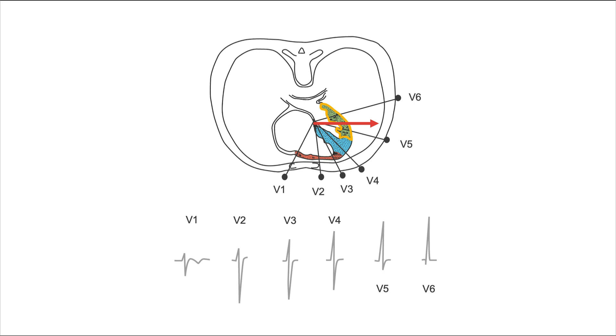And as the vector moves in this direction of V5 and V6, we get a large positive deflection in these leads and negative deflections in the leads opposite of V5 and V6. This is pretty much a mirror image of the large R-waves of V5 and V6. The vector of depolarization causes an upward deflection here in the leads that it moves towards.